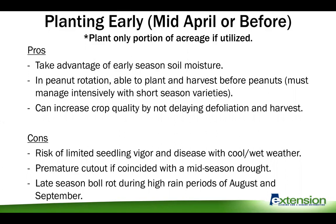Some cons with early planting: there is a big risk of loss of seedling vigor and disease if cool, wet weather sets back in during early to mid-April, which it has a habit of doing. Also, if your cotton crop is far enough along during mid-season and drought sets in, the crop could prematurely cut out. One of the biggest risks is that planting before April 15th usually leads to boll crack in August and September — a high rain period — putting you at very high risk of boll rot.